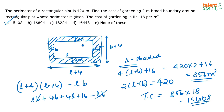We knew the perimeter of the inner rectangle, so we found the area of the outer rectangle since the boundary is 2 meters wide — using (L+4) into (B+4). Subtracting the inner rectangle area gave the shaded region area. Multiplying by the cost per meter squared gave the total gardening cost.